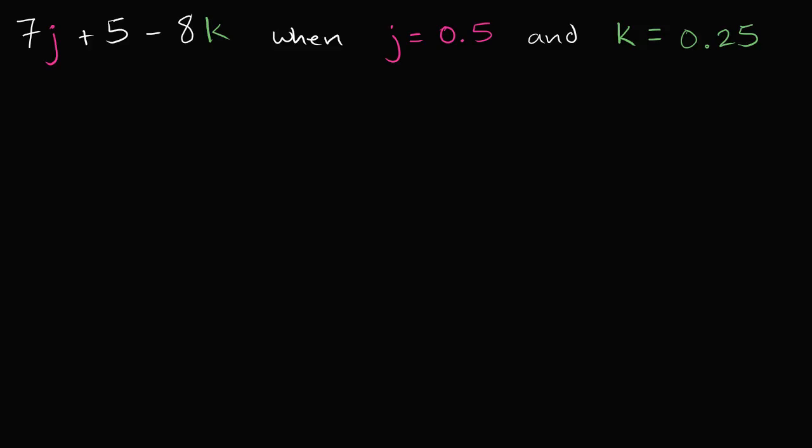Let's see if we could give ourselves some practice evaluating expressions that have two different variables in them. So let's see if we can evaluate the expression 7j plus 5 minus 8k when j is equal to 0.5 and k is equal to 0.25.